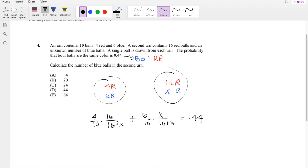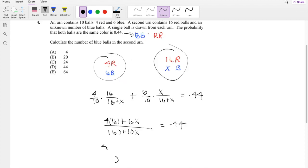So now we can actually just combine the numerators. The denominators are the same, so we can combine the numerators. The denominators are just going to be 160 plus 10x over 4 times 16 plus 6x is equal to 0.44. So this is 4 times 16 plus 6x is equal to 0.44 times 160 plus 10x.